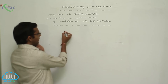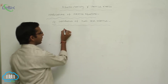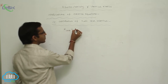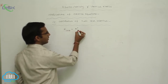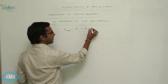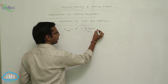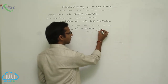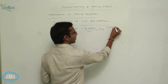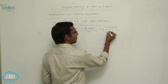For calculation of half cell potential, the EMF reaction equation is: E cell equals E naught minus 2.303RT divided by nF, into log of concentration of products by concentration of reactants.